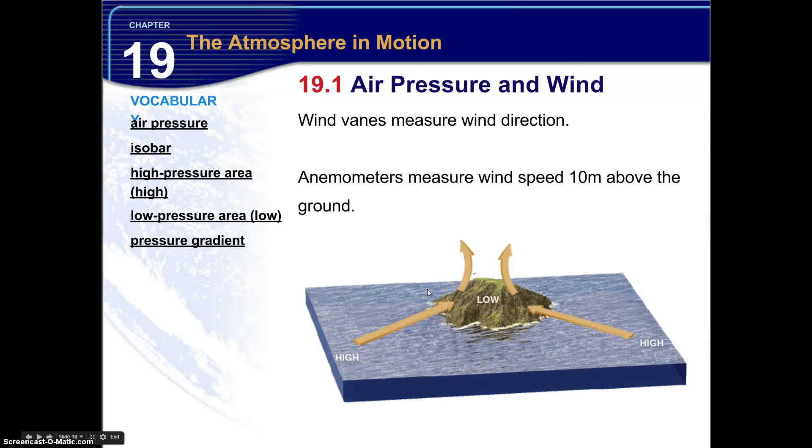Now wind vanes measure wind direction. Anemometers measure wind speed. This is typically done at about 10 meters above the ground.